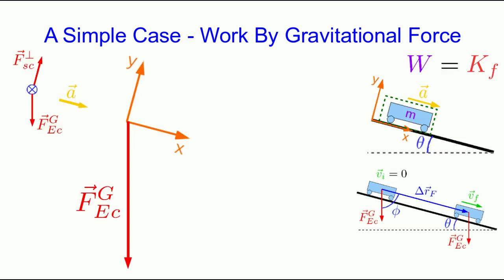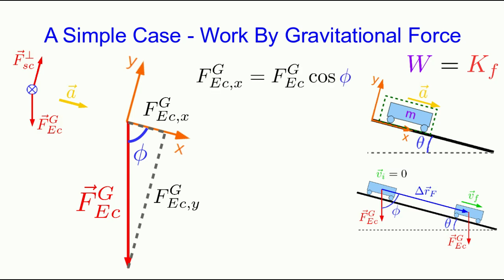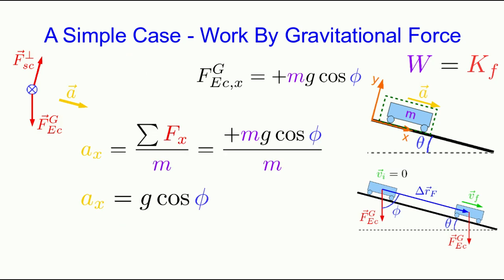I'm going to decompose the gravitational force into its components parallel and perpendicular to the slope, working in terms of angle phi. Dropping perpendiculars, I label the x and y components with angle phi. The x component is adjacent to phi, so it equals the magnitude of the gravitational force times cos(phi) — that is, mg cos(phi) — and that's positive with my choice of axes. The acceleration in the x direction is just the sum of forces in x over inertia, which gives g cos(phi).